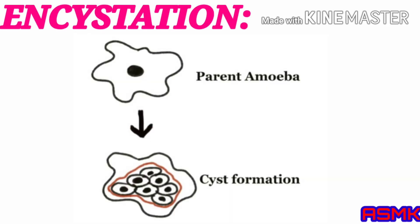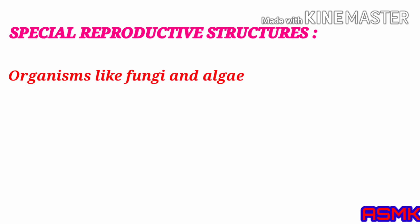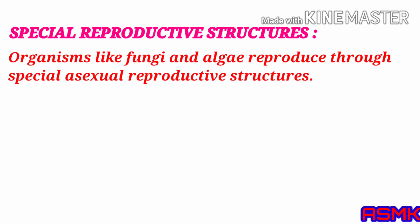Encystation and sporulation: under unfavorable conditions, Amoeba withdraws its pseudopodia and secretes a three-layered hard covering or cyst around itself. This phenomenon is termed encystation. When favorable conditions return, the encysted Amoeba divides by multiple fission and produces many minute amoeba or spores. The cyst wall bursts and spores are liberated into the surrounding medium, growing into many Amoeba. This phenomenon is known as sporulation.